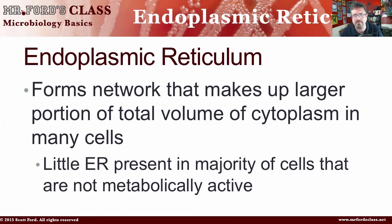A lot of K-12 science books used to — and some still do — show the endoplasmic reticulum as something separate, often separate from the nuclear envelope. That's not true. The ER network is actually continuous with the nuclear envelope. It forms a network that makes up a large portion of the total volume of the cytoplasm in many cells. This takes up quite a bit of space, but only in metabolically active cells. As we go through, you're going to notice why, because the endoplasmic reticulum deals with things you would associate with metabolically active cells.